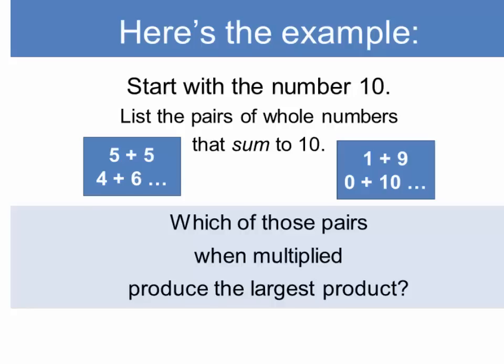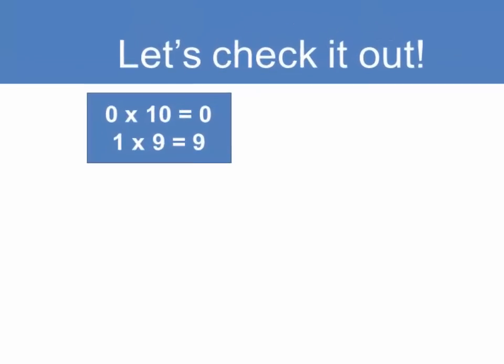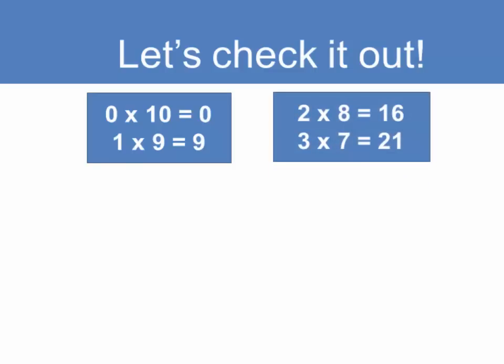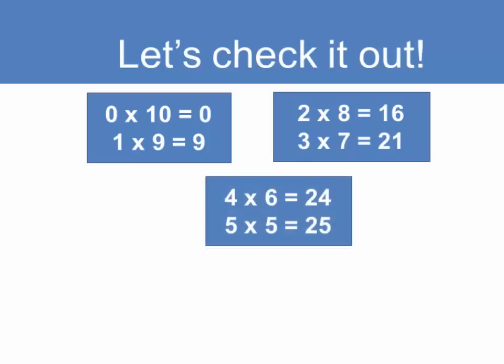And we're going to multiply them, and what we want to know is which of those pairs of numbers produce the largest product. Let's check it out. If we take 0 times 10 we get 0, that's not very promising. 1 times 9 gives us 9, so that's a bigger number. However, if we take 2 times 8 we get 16, and notice that 16 is quite a bit larger than 9. And something else is happening. If you subtract 2 from 8, the difference between them is 6, whereas if you subtract 1 from 9, the difference is 8. So the difference between the numbers is getting smaller and at the same time their product is getting larger. We can see that with 3 times 7 equals 21, the difference between them is only 4. So this might be a pattern. 4 times 6 equals 24, and 5 times 5 equals 25.